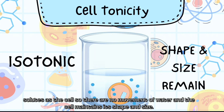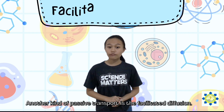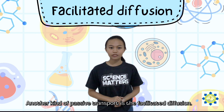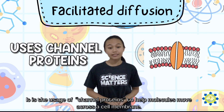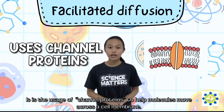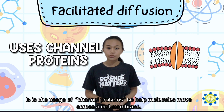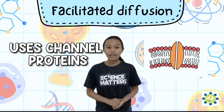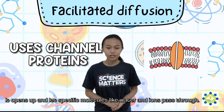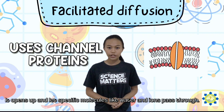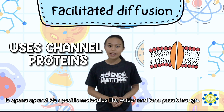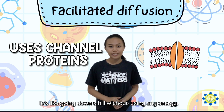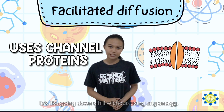Another kind of passive transport is facilitated diffusion. It is the usage of channel proteins to help molecules move across a cell membrane. It opens up and lets specific molecules like water and ions pass through. It's like going downhill without using any energy.